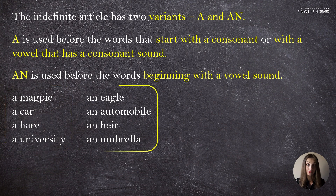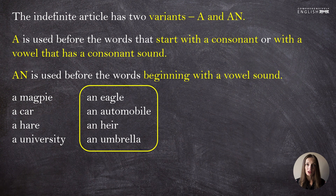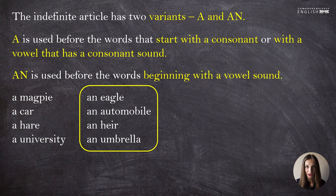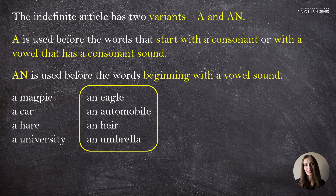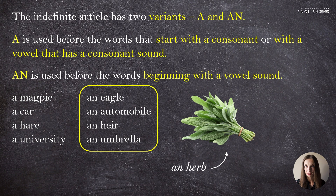In the second column we say 'an eagle,' 'an automobile,' 'an air,' 'an umbrella,' because these nouns start with vowel sounds — E or O. In the third case, 'air,' the letter H is not read. What's important is not what you write, but what you pronounce. If H is not pronounced and the word starts with the sound E, we need 'AN,' not 'A.' 'An herb' is another example of this situation.